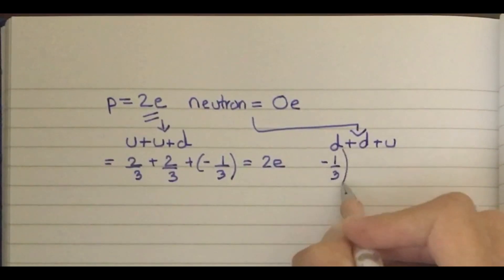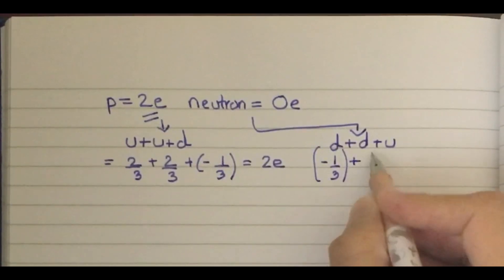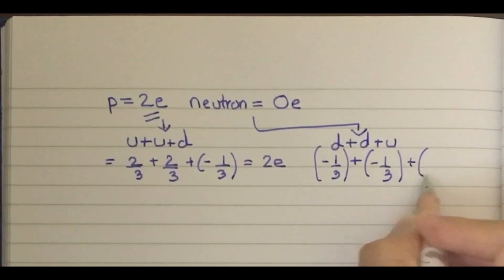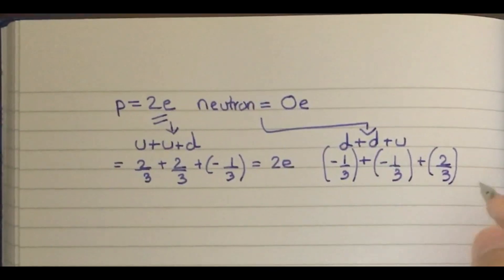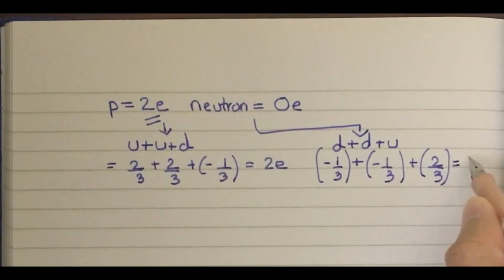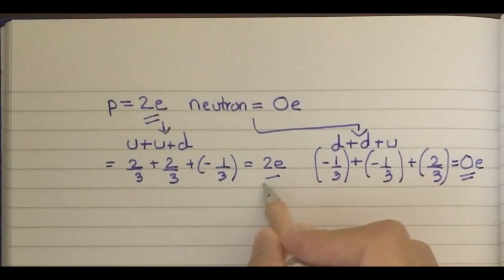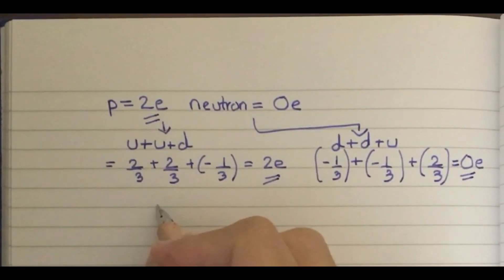As we know, d is -1/3, plus -1/3, and then we have u as +2/3. So we get 0e. You can calculate this, and the correct option is C.